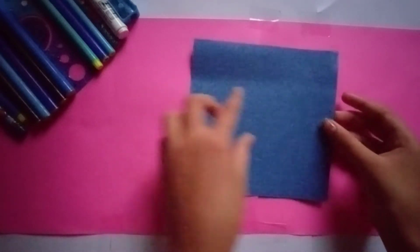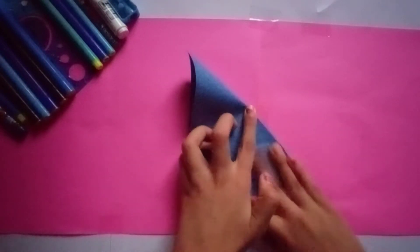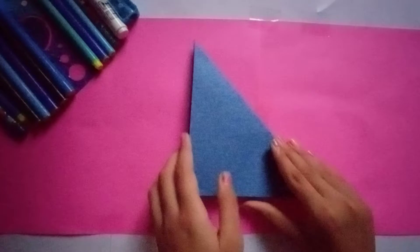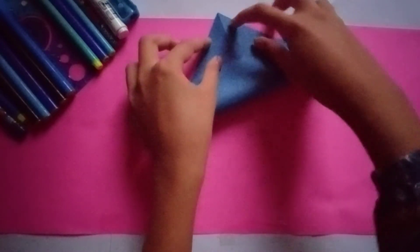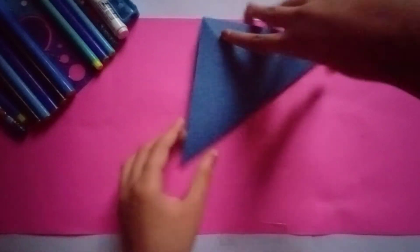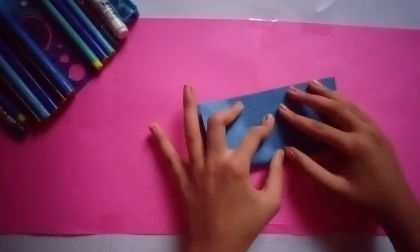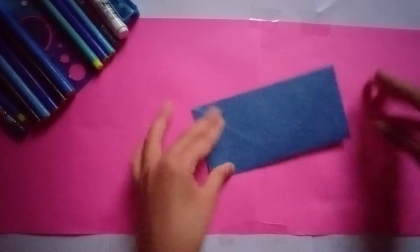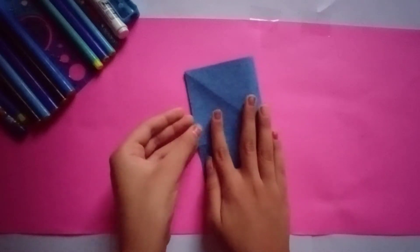Take your paper and fold it diagonally like this. Fold it diagonally again but the other side. Now open it and fold it in half. Then again unfold it and fold it in half the other side.